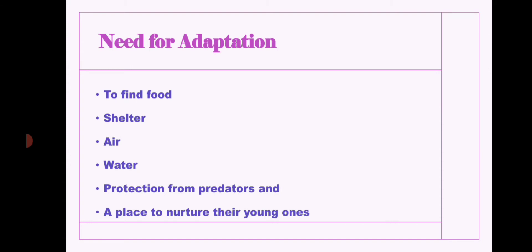Next, let us see what is the need for adaptation. Why do animals adapt themselves? They adapt to find food, shelter, air, and water, and to protect themselves from predators. Predators are those animals that hunt other animals. They also adapt to nurture their young ones. This is the need for adaptation.